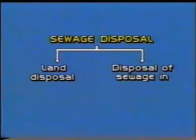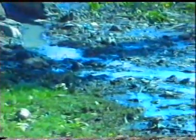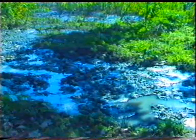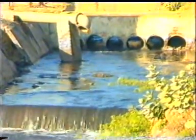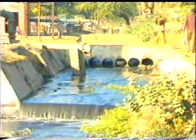Sewage can be disposed of either on land or in a large water body. One of the practices commonly adopted is that sewage is discharged on open land or in a nearby pond. This way of sewage disposal creates unhygienic and insanitary conditions, resulting in breeding of mosquitoes, flies, and bacteria that may cause outbreaks of diseases. It will not only spoil the aesthetic appearance of the city but also pollute the nearby water table.